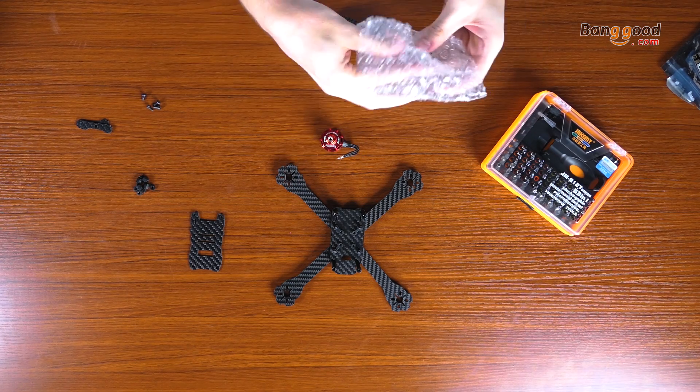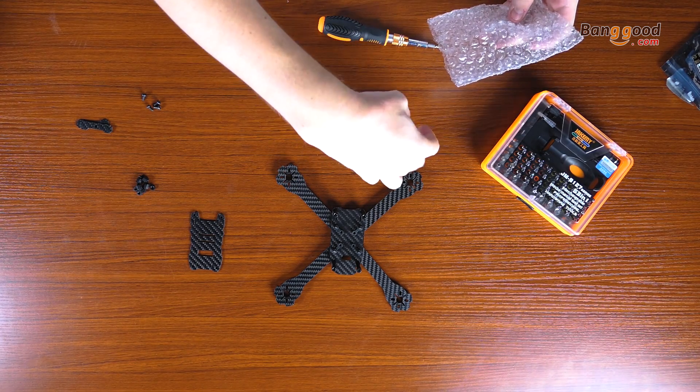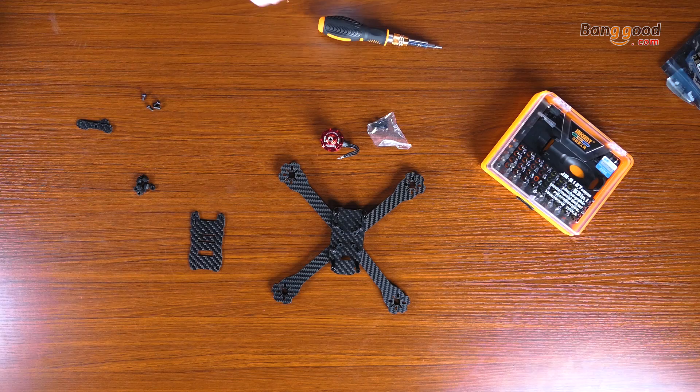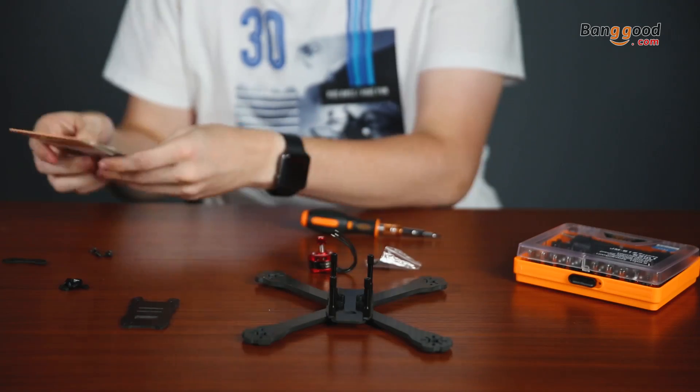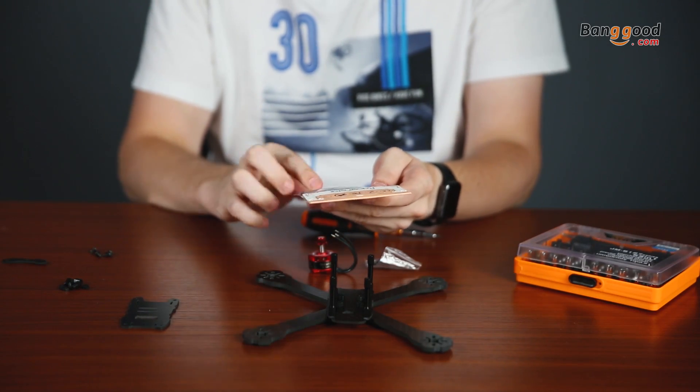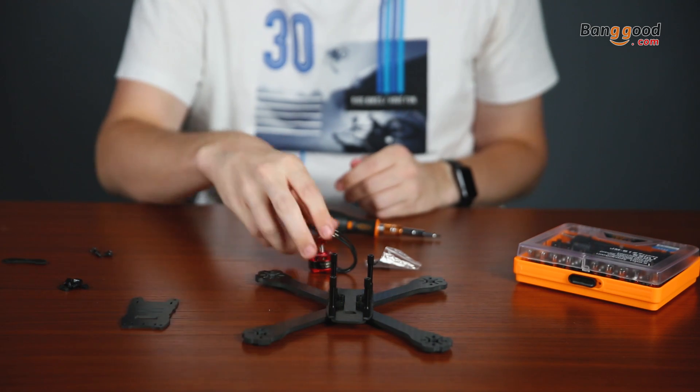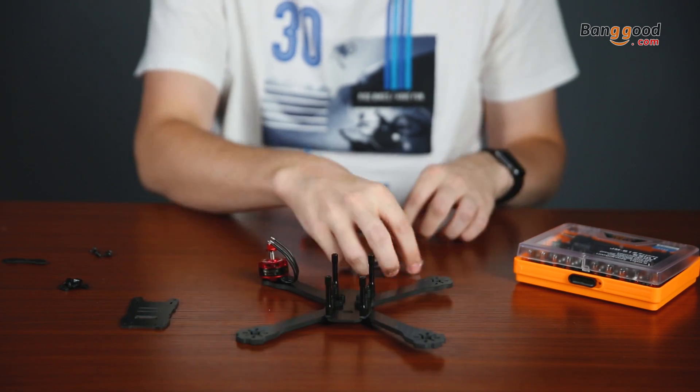We can see the motor wires and the screws to install them to the arms. Later of course we can install our ESC on the arms also, but let's first install all four motors.